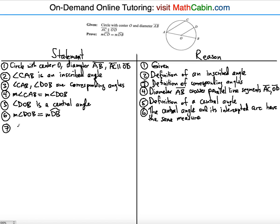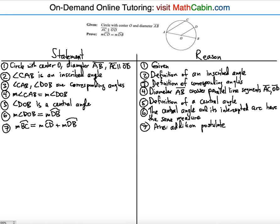The seventh step uses the arc addition postulate. Arc BC can be expressed as the sum of the smaller arcs: measure of arc BC is equal to the measure of arc CD plus the measure of arc DB. This is explained by the arc addition postulate.